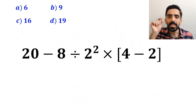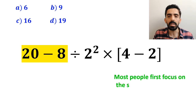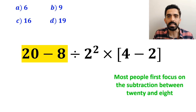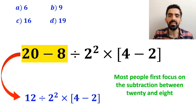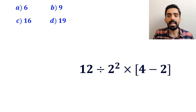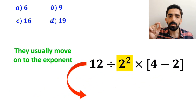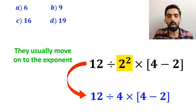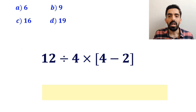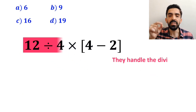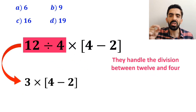Let's go step by step and solve it together. To solve this question, most people first focus on the subtraction between 20 and 8, and they rewrite the whole expression as 12 divided by 2 squared multiplied by 4 minus 2 inside the brackets. In the next step, they usually move on to the exponent and rewrite this expression as 12 divided by 4 multiplied by 4 minus 2 inside the brackets.